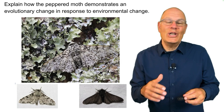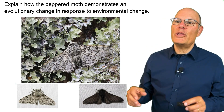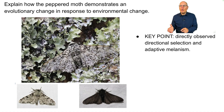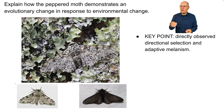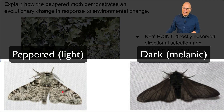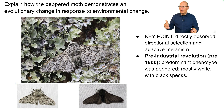To end this discussion of all types of selection, we'll look at the question: explain how the peppered moth demonstrates an evolutionary change in response to environmental change. The peppered moth provides science with a directly observed example of directional selection and adaptive melanism in response to an observed environmental change. The peppered moth comes in two forms: a peppered form (mostly light colored) and a dark form. Before the Industrial Revolution — which began with the burning of coal — the predominant phenotype was peppered.